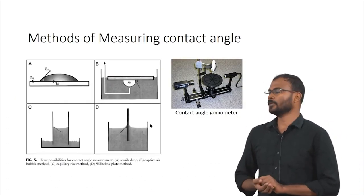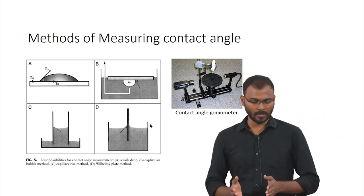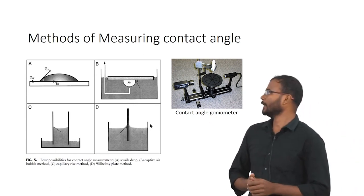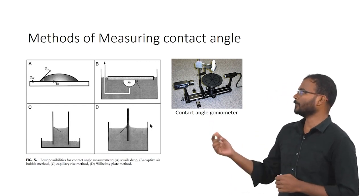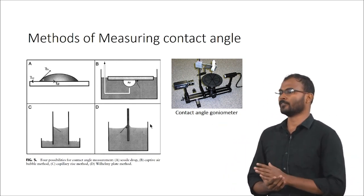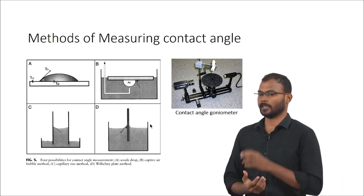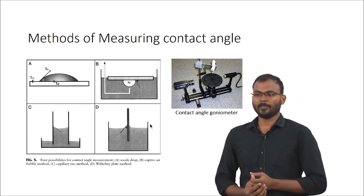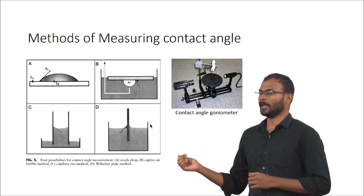For measuring the contact angle we use an instrument called a contact angle goniometer. There are different methods: the sessile drop method is the widely used technique, where you put a drop on the material surface and measure the angle between the solid-liquid interface and the liquid interface by drawing a tangent at the point of contact. The captive air bubble method is similar, but instead of a liquid drop on top, an air bubble is introduced below the material surface, which is immersed in liquid solution.